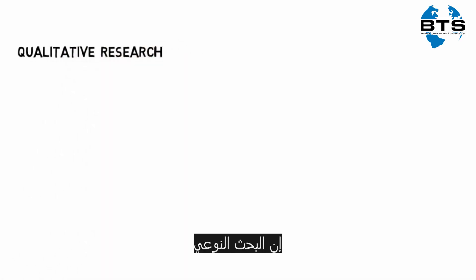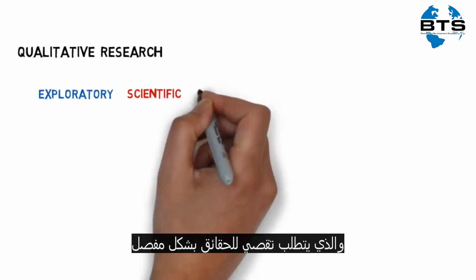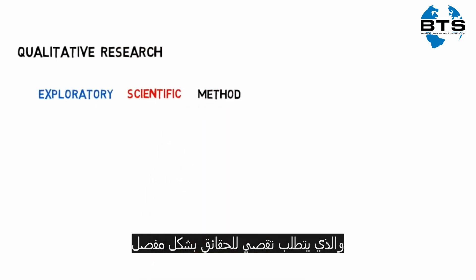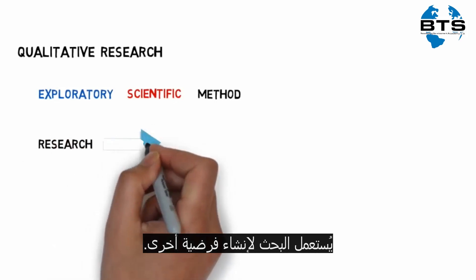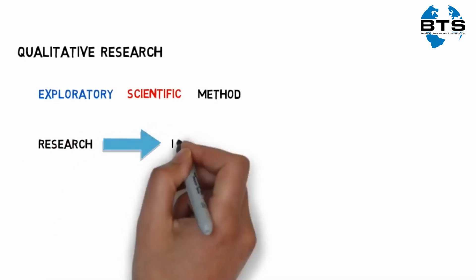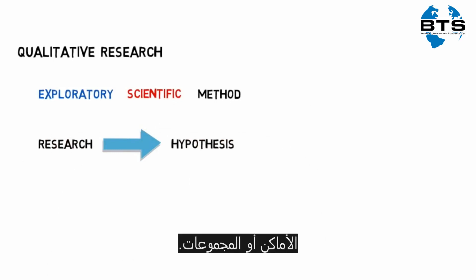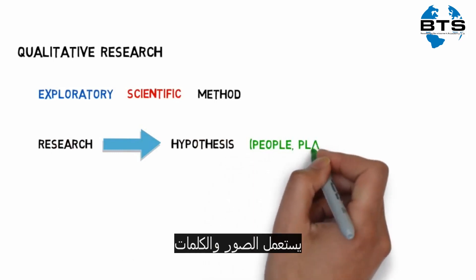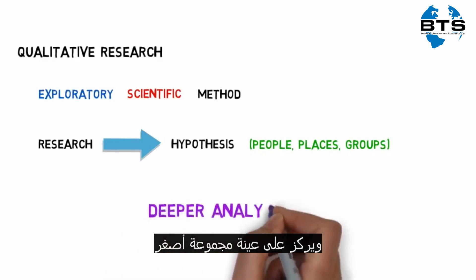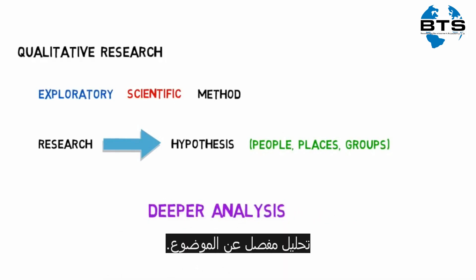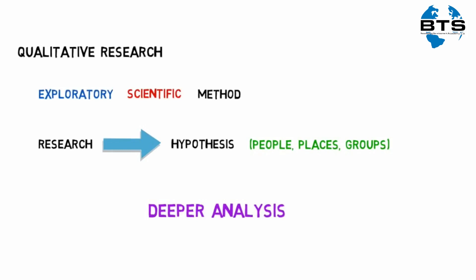On the other hand, qualitative research tends to use an exploratory scientific method that enables a more in-depth inquiry into the subject area. The research is used to generate a hypothesis and develop an understanding about particular people, places or groups. It uses words and images rather than numbers and focuses on a smaller sample group to help aid a deeper analysis of the topic. Qualitative researchers prefer not to make generalisations based on their findings.